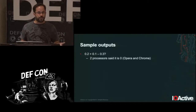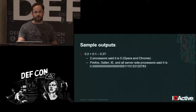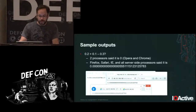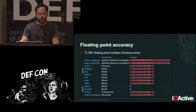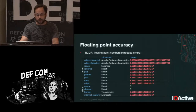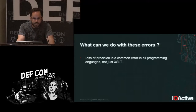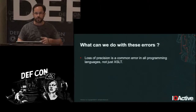Only two processors said the result was 0 — Opera and Chrome. The rest said something close but not quite. This floating-point imprecision is present across all implementations and across all programming languages — JavaScript, Perl, Python, C. Floating-point numbers carry certain extra decimals that you may be able to exploit.